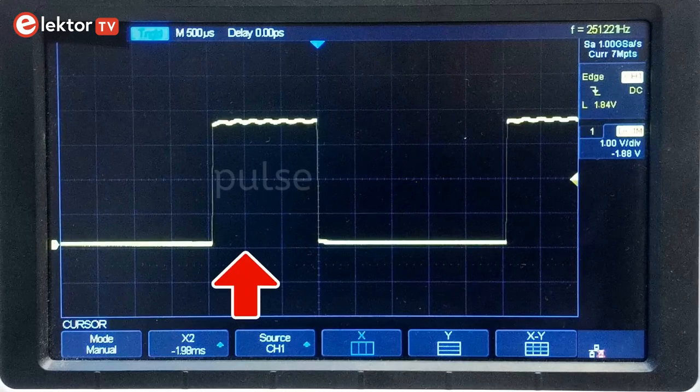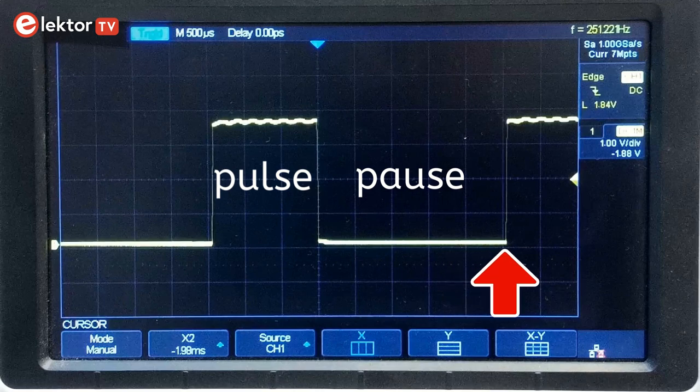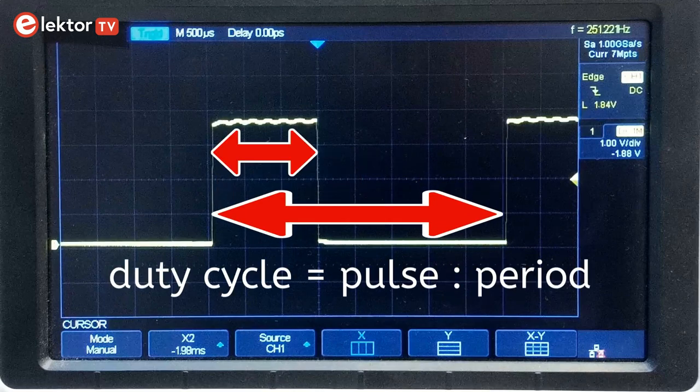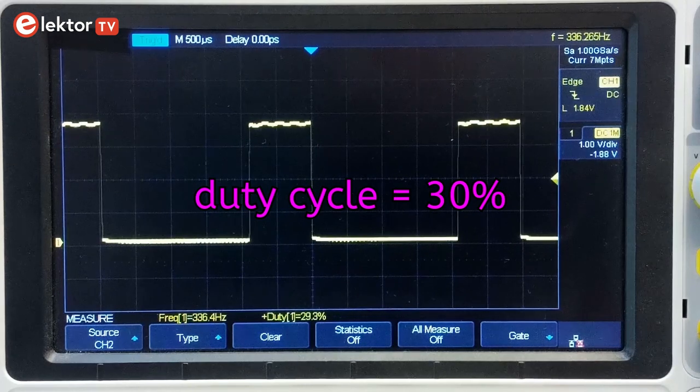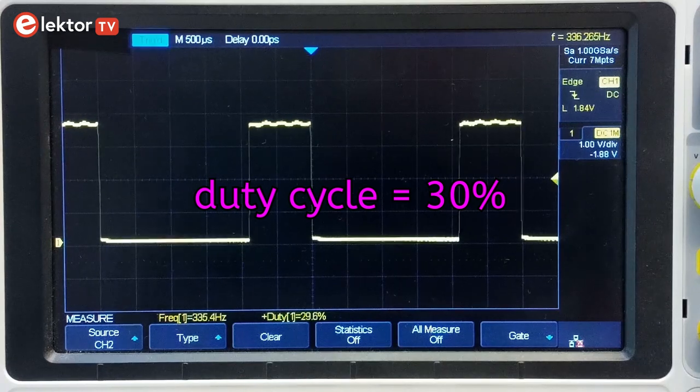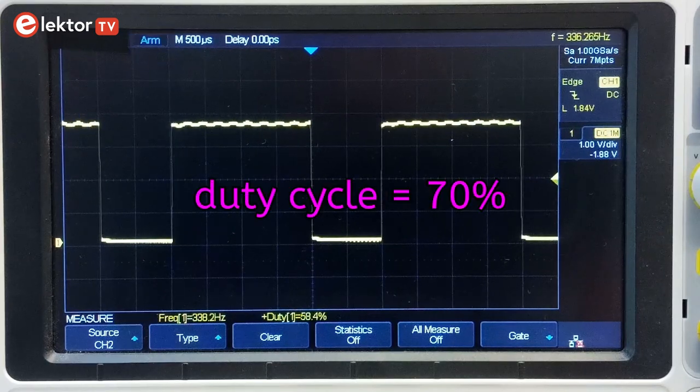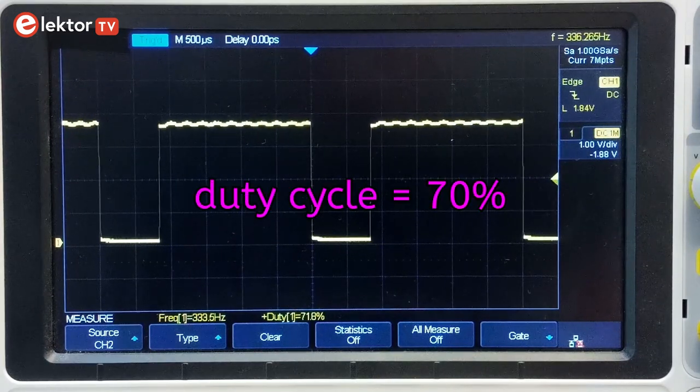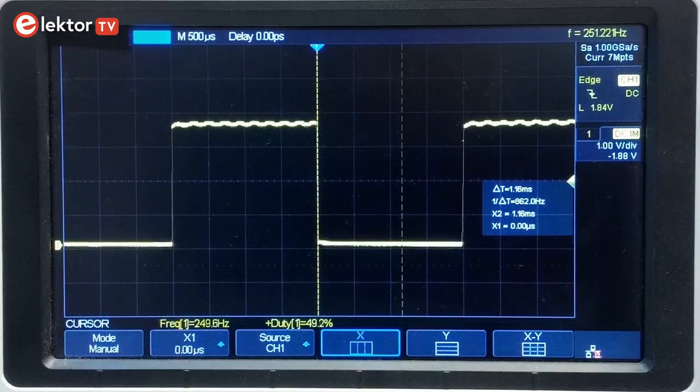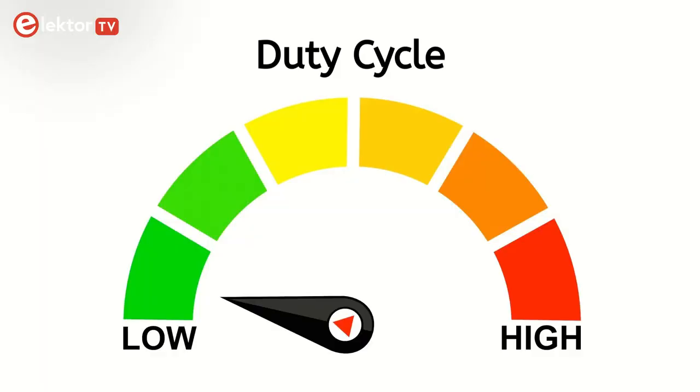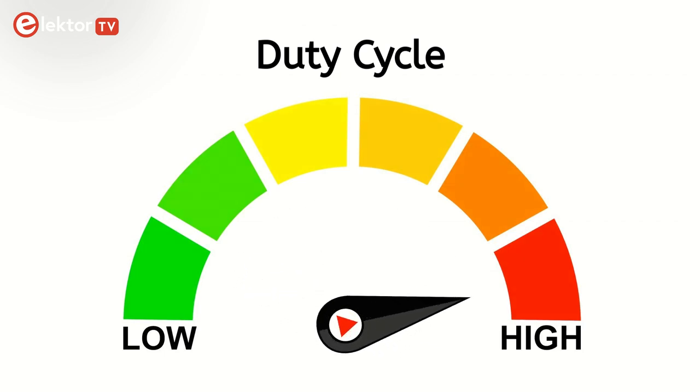A rectangle wave consists of a pulse followed by a pause. Together they determine the period of the rectangle wave. The duty cycle is the ratio between the pulse duration and the signal's period and is given as a percentage. A duty cycle of 30% means that the pulse duration is 30% of the period of the signal, while a duty cycle of 70% means that the pulse duration is 70% of the period. A square wave has a fixed duty cycle of 50%. A duty cycle of 0% is a signal that is always low, a duty cycle of 100% is a signal that is always high.